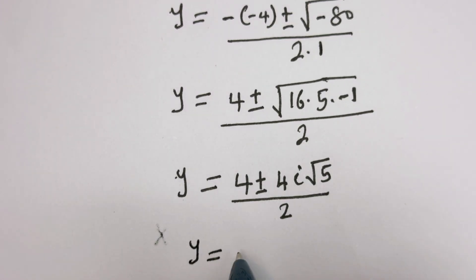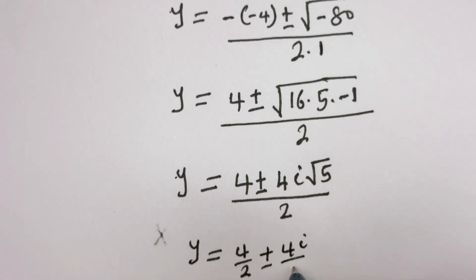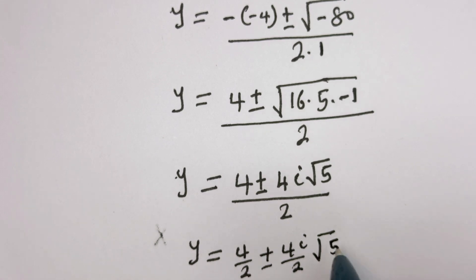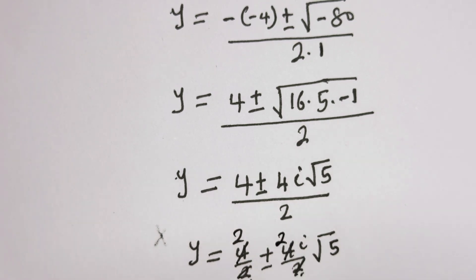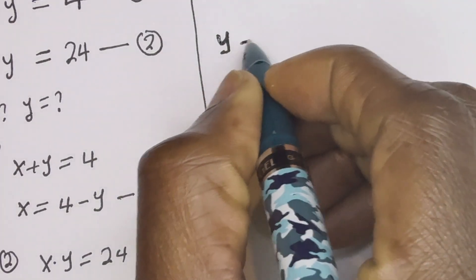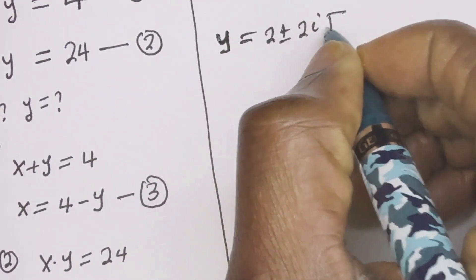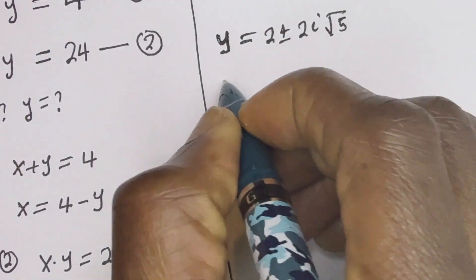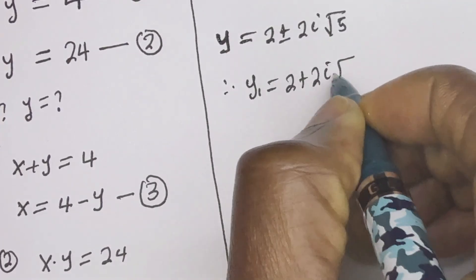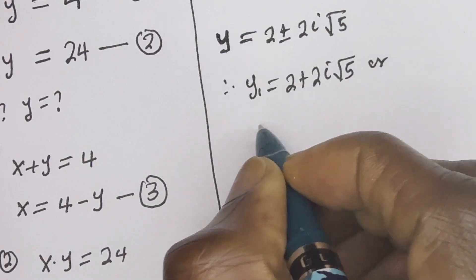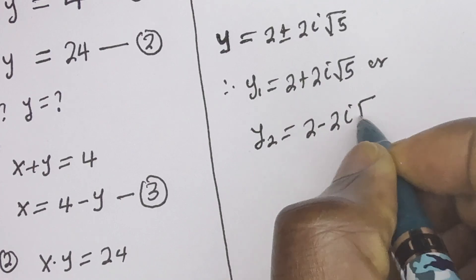So y is equal to 4 divided by 2 plus or minus 4i root 5 divided by 2, which simplifies to y equals 2 plus or minus 2i root 5. Therefore, y1 is equal to 2 plus 2i root 5, and y2 is equal to 2 minus 2i root 5.